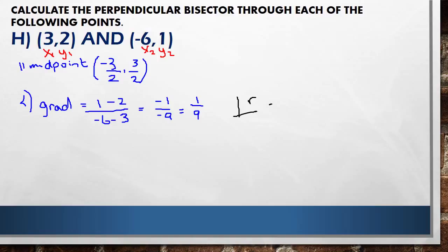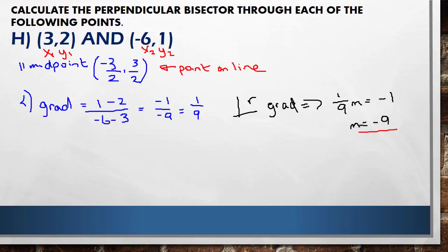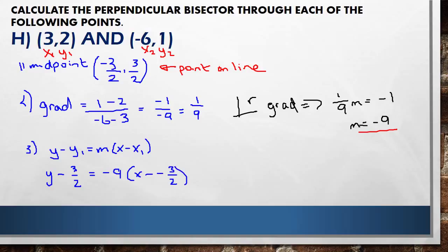We need the perpendicular gradient. Perpendicular gradients multiply together to give minus 1, so taking our gradient 1/9 and multiplying by M gives minus 1. Using the calculator: minus 1 divided by 1/9 — taking the reciprocal — gives M equals minus 9. That's our perpendicular gradient. The point on our line is (minus 3/2, 3/2). Using y minus y1 equals M times (x minus x1): y minus 3/2 equals minus 9 times (x minus minus 3/2).